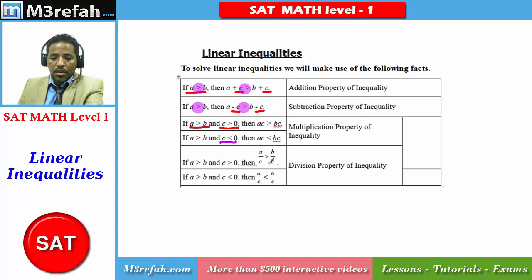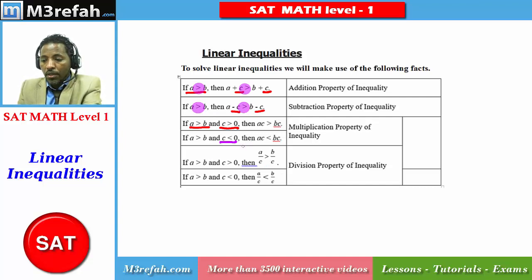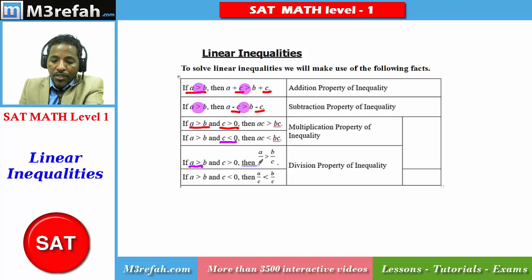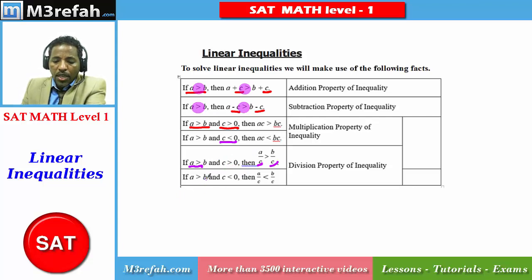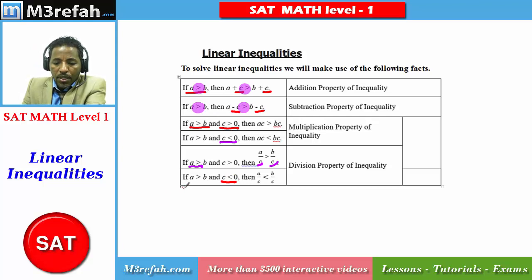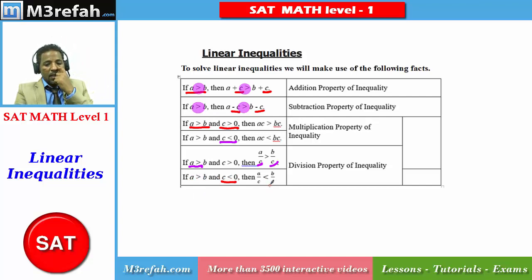Similarly, when we come to division of A and B by the same value of C, it follows the same rule as multiplication. If A is greater than B and you divide A and B by the same value of C, provided that C is greater than 0, then the sign of the inequality doesn't change — it's the greater than sign before, and it's also greater than after you divide both sides by a positive constant. However, when you divide both sides by a number which is less than 0, meaning a negative value, dividing A by C and B by C will reverse the direction of the inequality from greater than to less than.